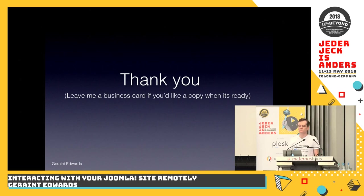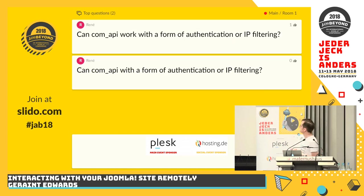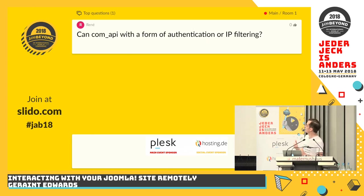Any questions? On authentication: it certainly works with authentication. I don't know about IP filtering — not yet, but you could add it into your own plugin. You could even write your own plugin inheriting from the articles plugin and add an IP filter at the beginning of that. There's also a GitHub repository for COM API, so I'll be putting in my fix for the featured articles filter and my suggestions for changes to the router. How many people do use any of these services for accessing their sites remotely? About half.